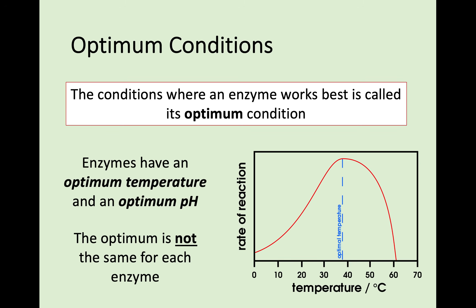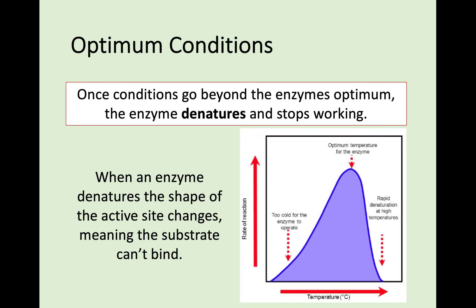Once conditions go beyond optimum, the enzyme denatures — it essentially starts breaking down. The active site changes its shape so the substrate can't bind to it anymore, and the enzyme stops working. As you can see in the diagram, the temperature is increasing and the rate of reaction increases up to its optimum point. Once past the optimum point, denaturation takes place, the enzyme denatures, and the rate of reaction then plummets. It's important to know this curve: the rate increases towards the optimum, the enzyme works best at the optimum, and beyond the optimum the enzyme denatures and stops working.